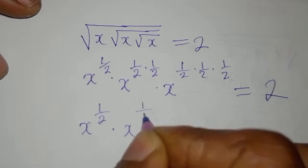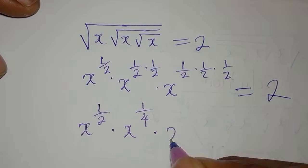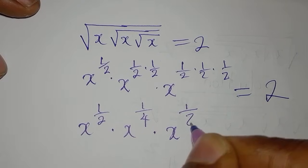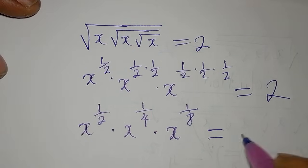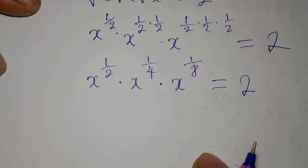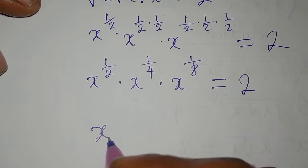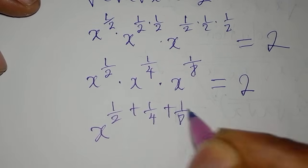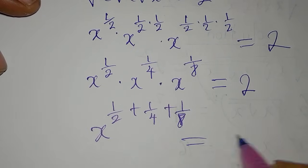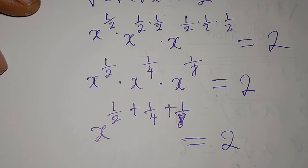This gives us x to the power of 1 over 2, times x to the power of 1 over 4 (since 1×1=1 and 2×2=4), times x to the power of 1 over 8 (since 2×2×2=8), all equal to 2. Because we have the same base x, I'll add the powers: 1 over 2 plus 1 over 4 plus 1 over 8 equals 2.